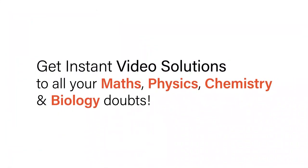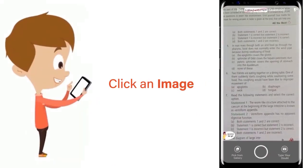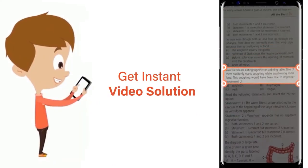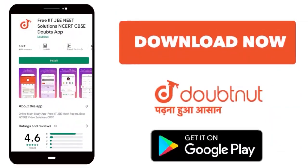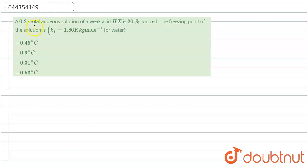With Doubtnut, get instant video solutions to all your math, physics, chemistry, and biology doubts. Just click an image of the question, crop it, and get an instant video solution. Download the Doubtnut app today. Now, for a weak acid HX that is 20% ionized, the freezing point depression constant Kf is 1.86 Kelvin kg per mole for water.